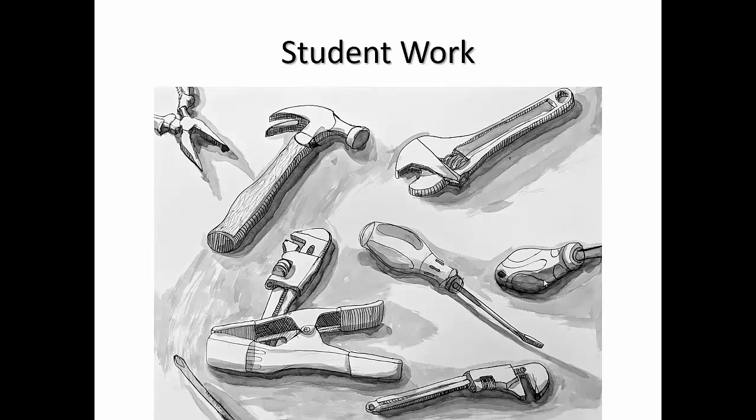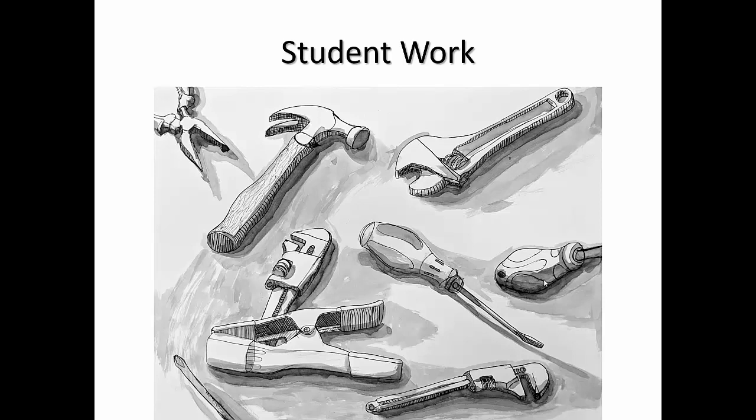Here's the student work of tool drawings. Now, I'm not expecting people at home to have ink wash necessarily. So you can do it with just pen and ink if you want with cross hatching, or you can do it with pencil. But here's the tack drawing assignment. You're going to draw 10 or more with cage volume in your sketchbook. In the process, you draw a continuous line without lifting up your pen or pencil. Draw slowly. Observe the form carefully. Imagine you've never seen the object before. So this is where I give the analogy of thinking of yourself as an alien from another planet.